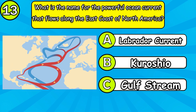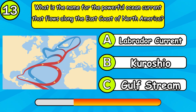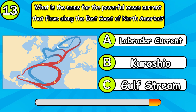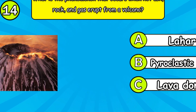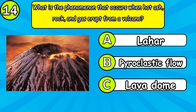What is the name for the powerful ocean current that flows along the east coast of North America? What is the phenomenon that occurs when hot ash, rock, and gas erupt from a volcano?